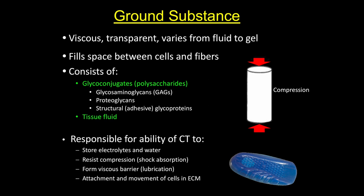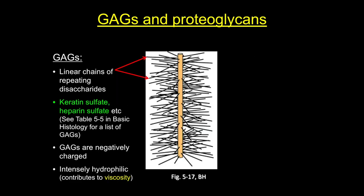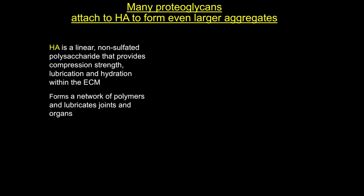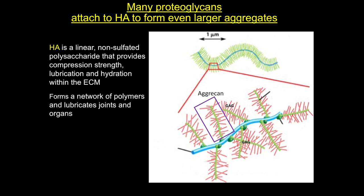Glycosaminoglycans are negatively charged linear chains of repeating disaccharides capable of binding large quantities of water, and most are sulfated. They are usually covalently linked to protein backbones to form larger structures called proteoglycans — like the bristles on a large bottle brush that can hold a lot of water. The only non-sulfated glycosaminoglycan is hyaluronic acid, which also does not bind to a protein backbone. Even so, proteoglycans attach to hyaluronic acid to make even larger macromolecules.